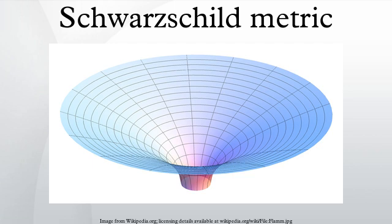For example, the radius of the Sun is approximately 700,000 km, while its Schwarzschild radius is only 3 km.